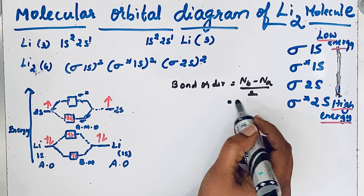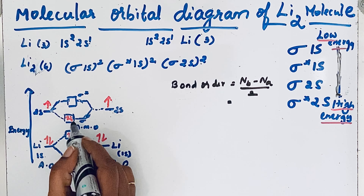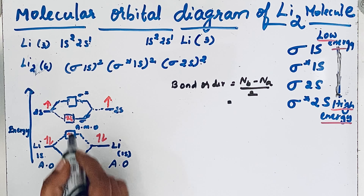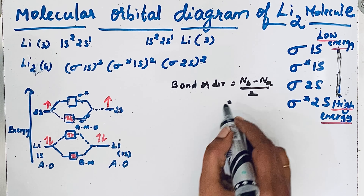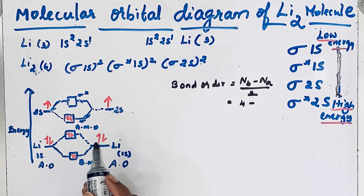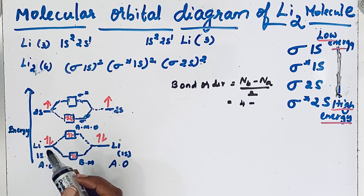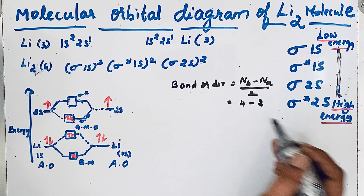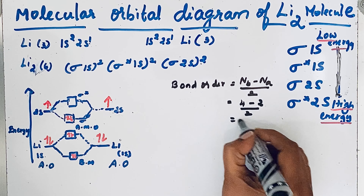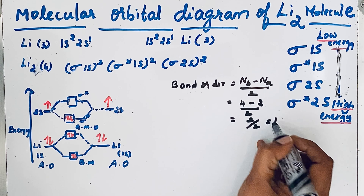In bonding electrons we have 2 plus 2 equals 4 electrons, and in antibonding molecular orbitals we have only 2 electrons. So bond order equals (4 minus 2) divided by 2, which gives us 1.